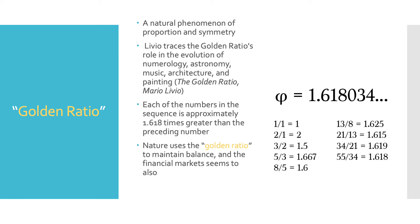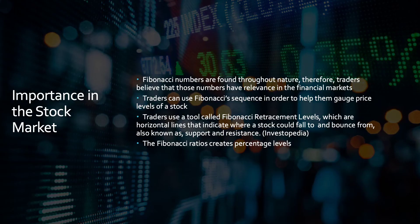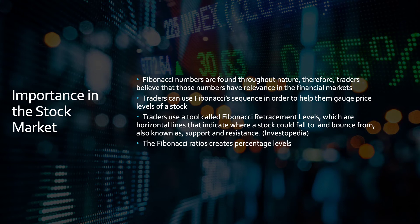An example where Fibonacci numbers are used in our world is in the stock market. Nature uses the golden ratio to maintain balance, and the financial market seems to as well. Fibonacci numbers are found throughout nature; therefore, traders believe those numbers have relevance in the financial markets. These analysts use the sequence to help gauge price levels of a stock. Traders use a tool called Fibonacci retracement levels, which are horizontal lines that indicate where a stock could fall or bounce from, also known as support and resistance.